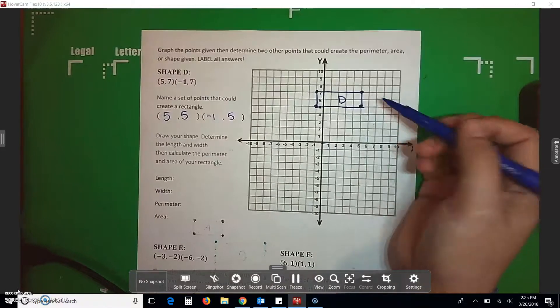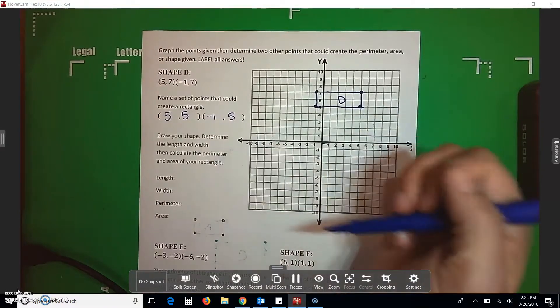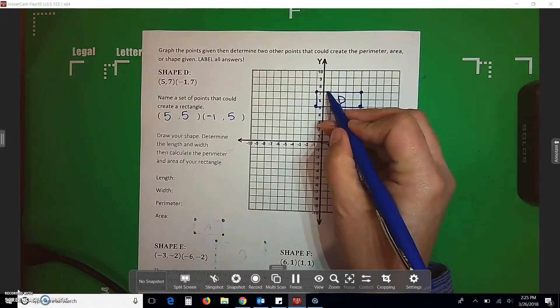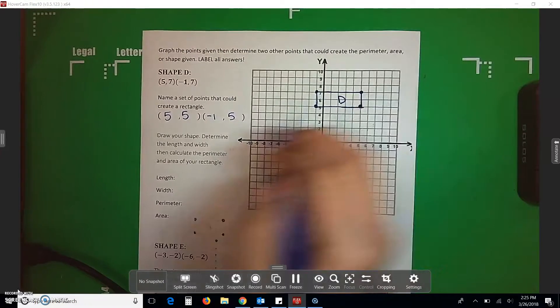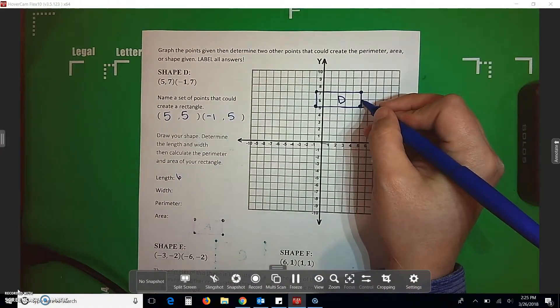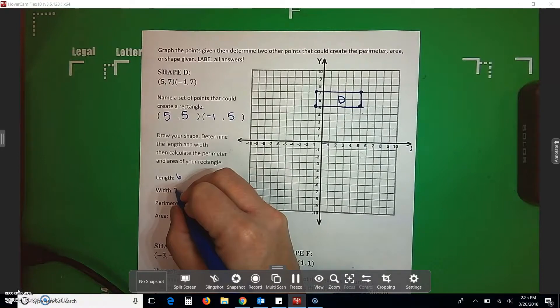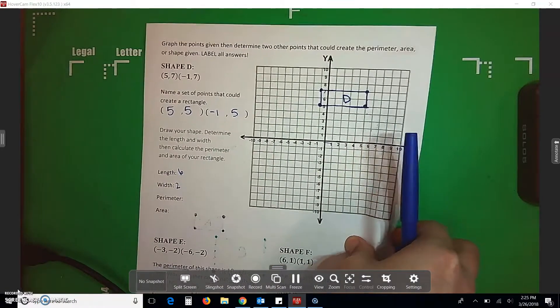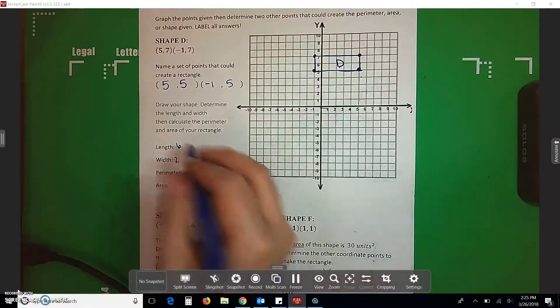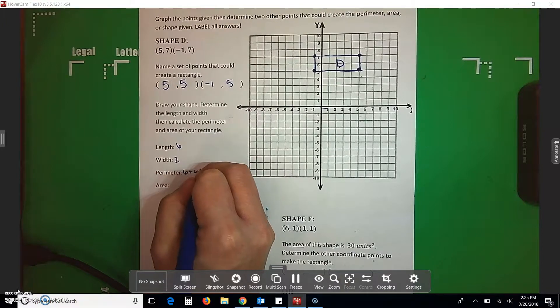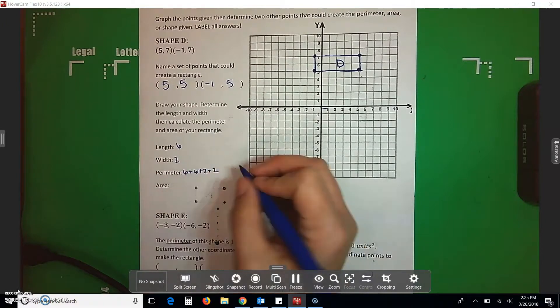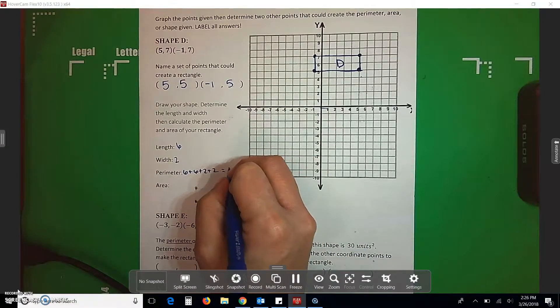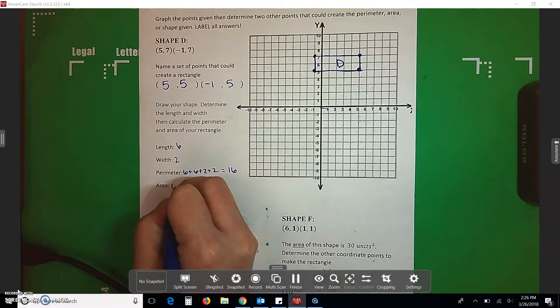So, it's a draw your shape. That's what I did when I connected my dots. Determine your length and width. 1, 2, 3, 4, 5, 6 for my length. 1, 2 for my width. My perimeter. 6 plus 6 plus 2 plus 2 is 16. My area.